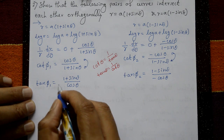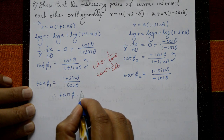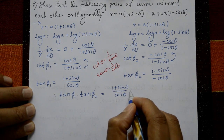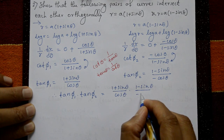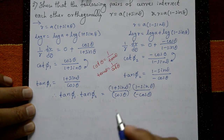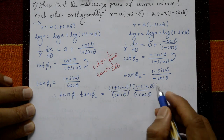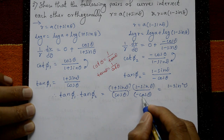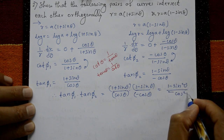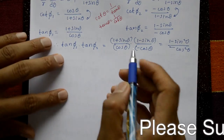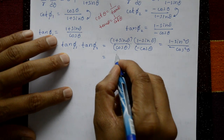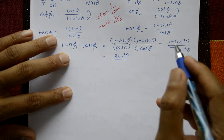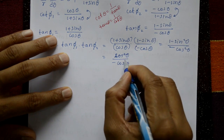Now compute tan φ₁ into tan φ₂. It equals (1 + sin theta) divided by cos theta, multiplied by (1 - sin theta) divided by minus cos theta. The numerator gives (1 + sin theta)(1 - sin theta) = 1 - sin²theta, using the identity (a+b)(a-b) = a² - b². The denominator gives cos theta times minus cos theta = minus cos²theta. Since 1 - sin²theta = cos²theta by the Pythagorean identity, we get cos²theta divided by minus cos²theta.